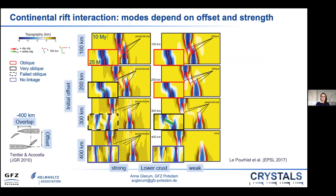More recent studies have shown that for continental extension and the interaction of continental rifts, initial offset also determines the type of linkage between rifts. Note that both the spatial and temporal scale are very different — now we're talking about initial offsets of 100 to 400 kilometers and temporal evolutions of 10 to 25 million years.